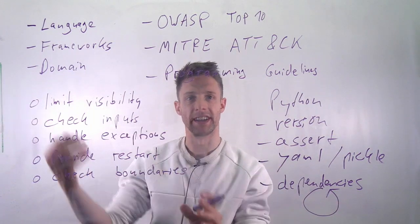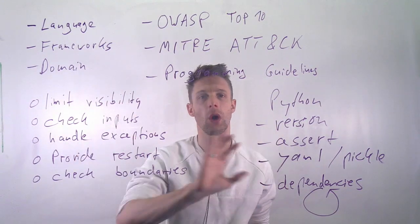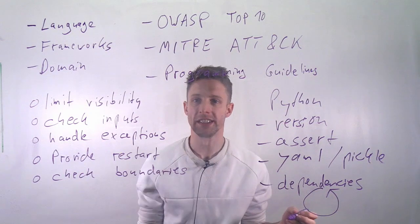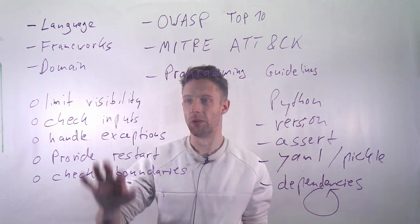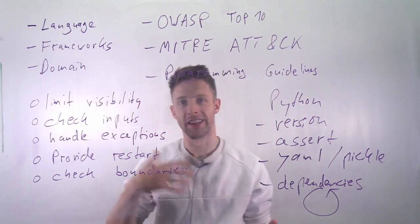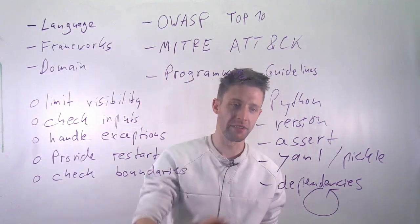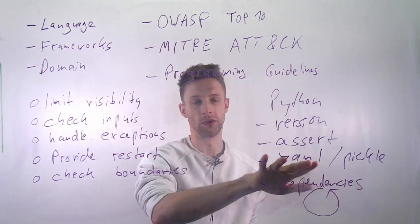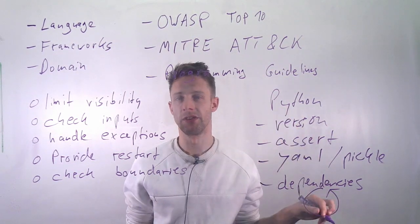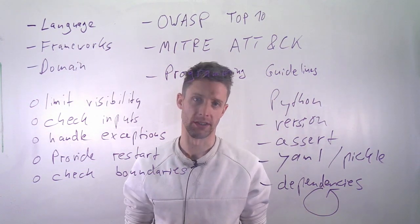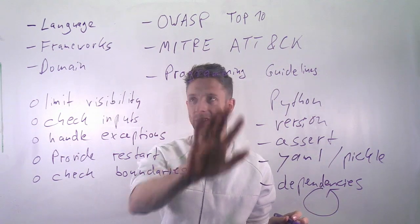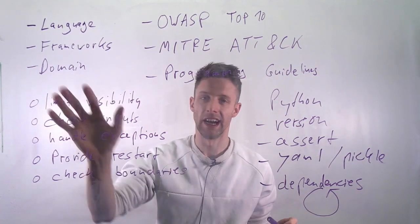What happens with these guidelines — both specific and general — is that they are often included in a company's coding guidelines. It's not only about indentation or naming conventions; it also includes things like: whenever you introduce a dependency, check certain criteria; only use a specific version of Python; don't use assert statements. Some of these rules, like avoiding assert or insecure YAML loading, can be automatically checked with linter tools, so you don't need a manual checklist — many of these things can be verified automatically. This is where it all comes together in company-specific programming guidelines tailored to your language, frameworks, and domain.